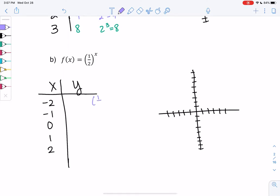So we'll do 1 half to the negative 2 power. That tells me to flip it. So that's 2 squared or 4. So we go left to negative 2 and then we go up to 4. 1 half to the negative 1 power tells me to flip it. So it becomes 2 to the 1, which is 2.